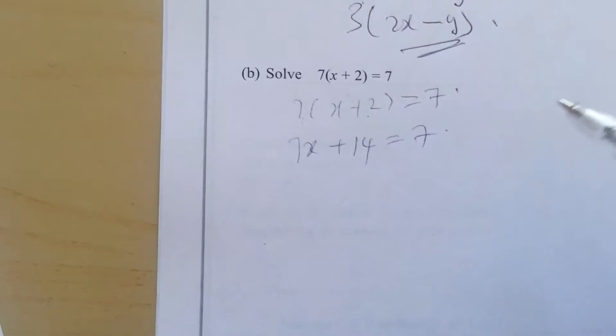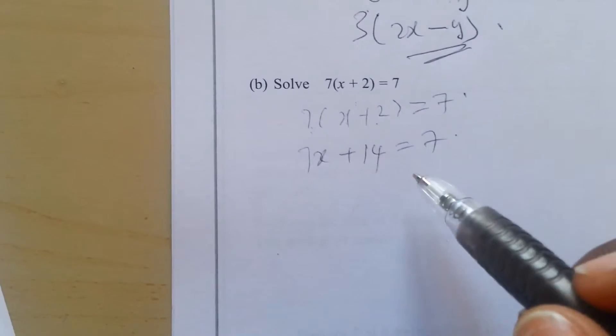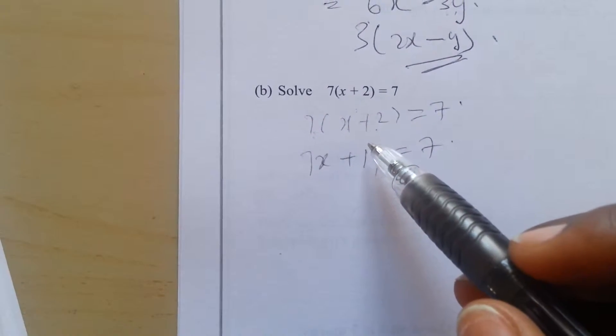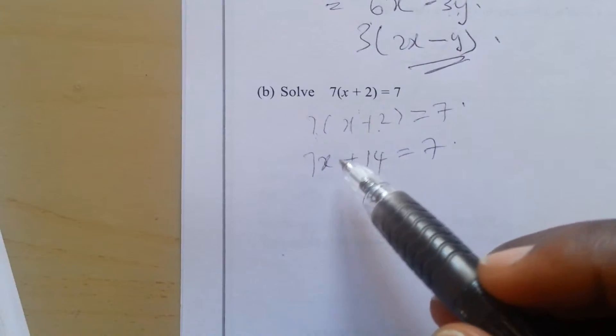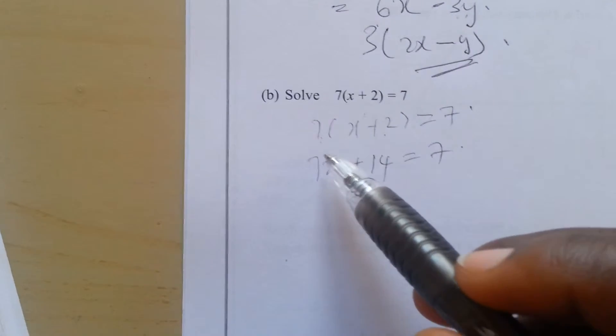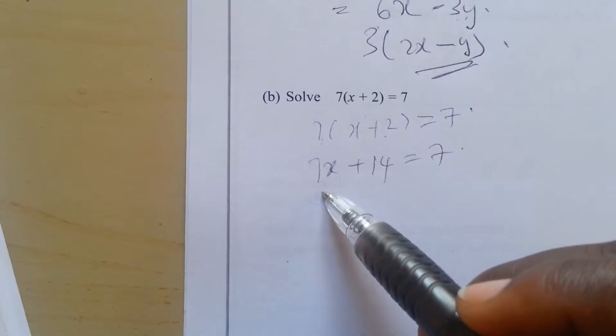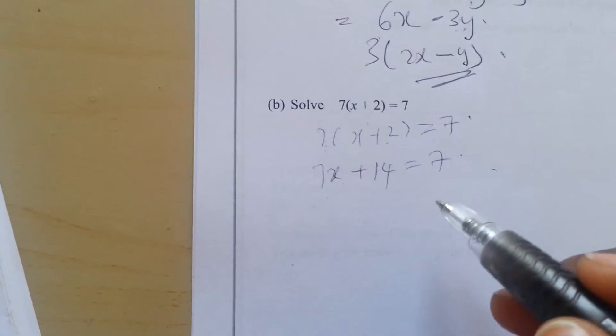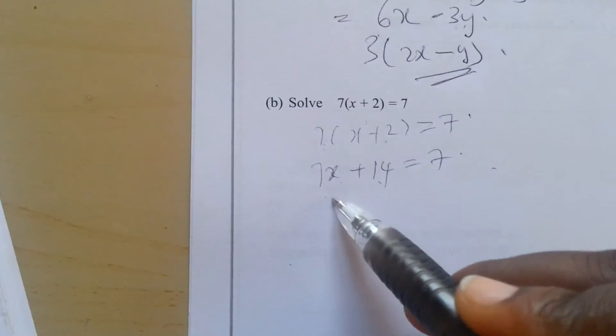Now we're going to let the unknowns be on the left hand side, that's the ones that have x attached to them, and the ordinary ones on the right hand side. So to have that, we're going to subtract both sides by 14.